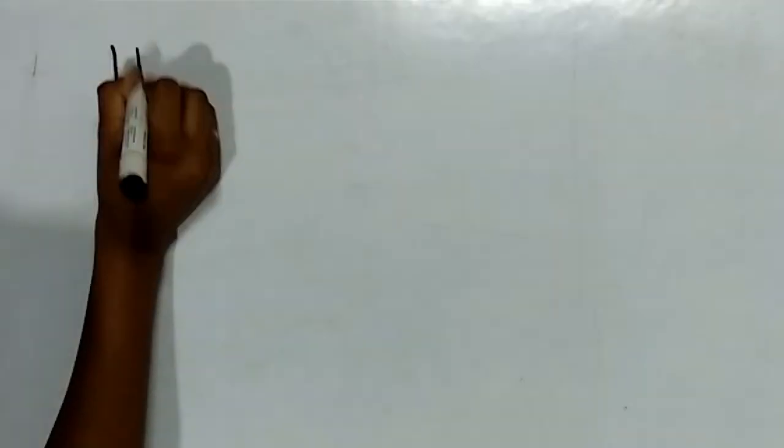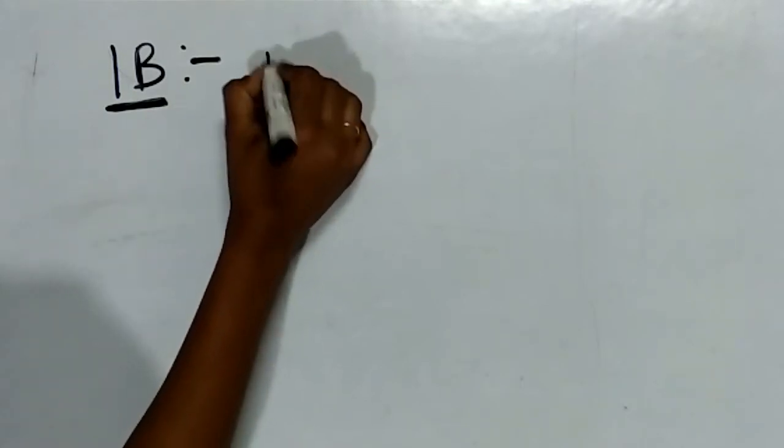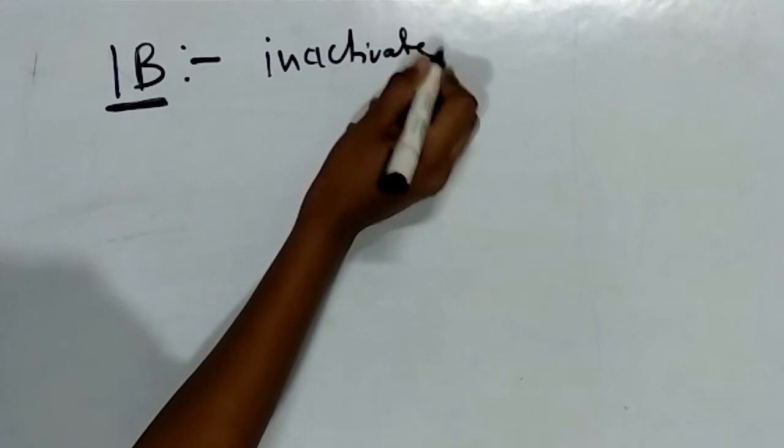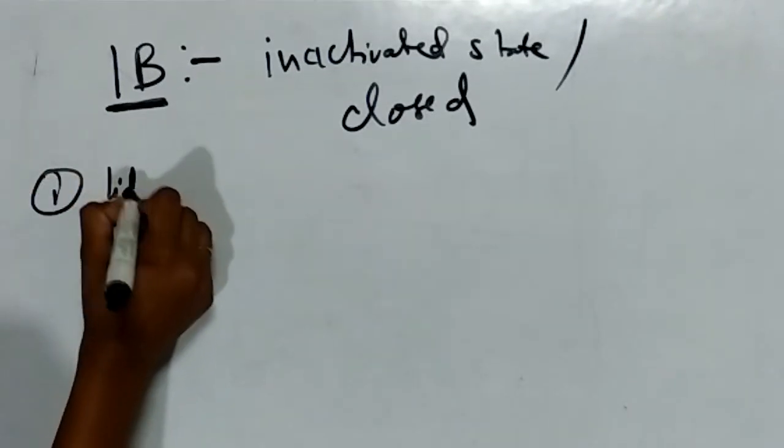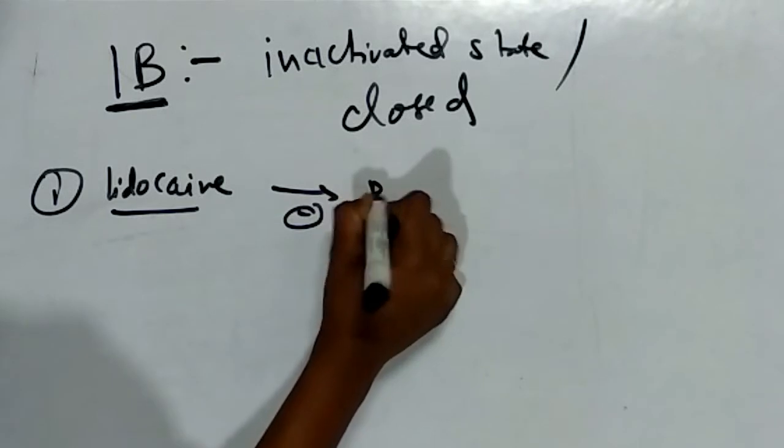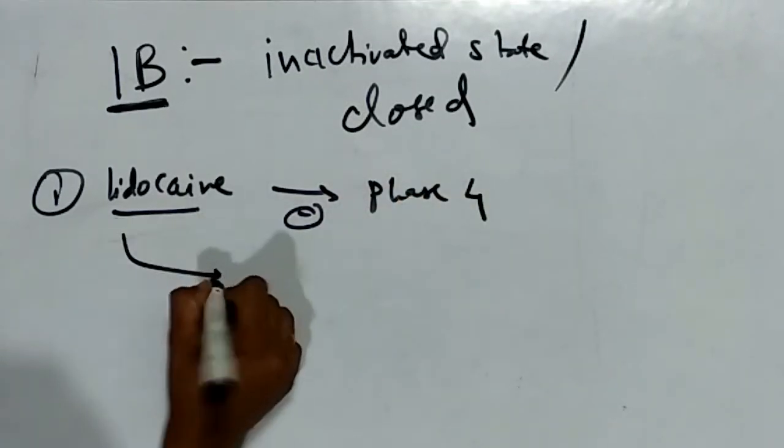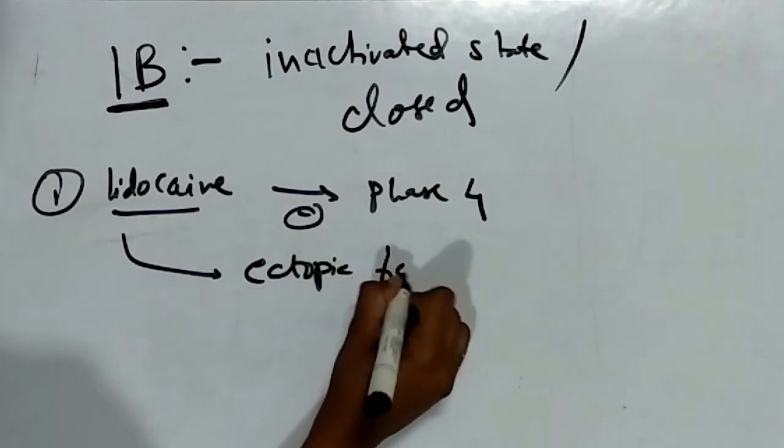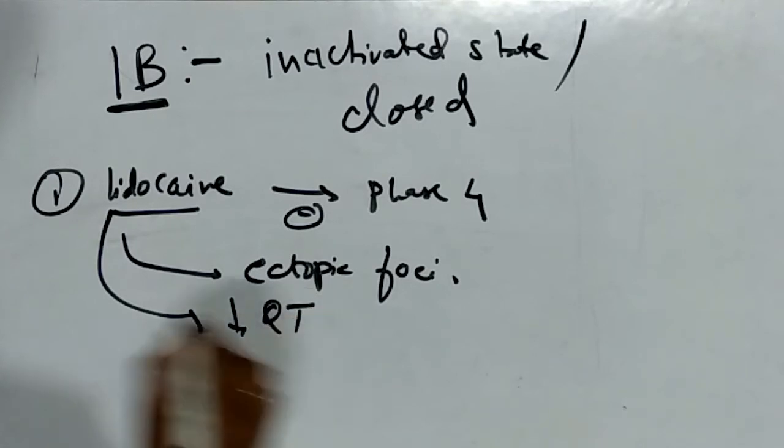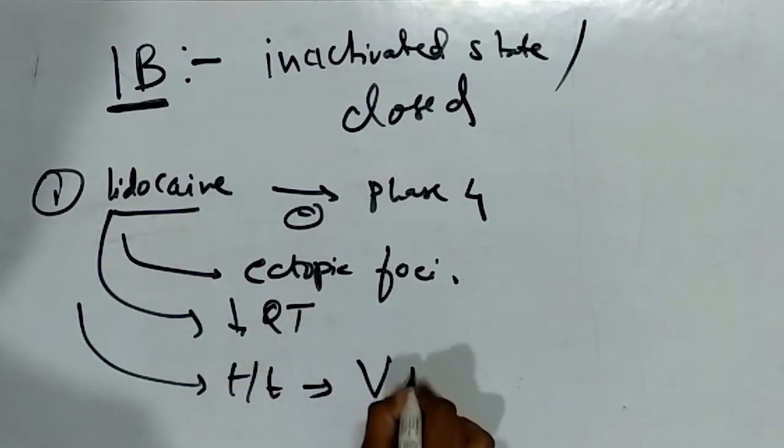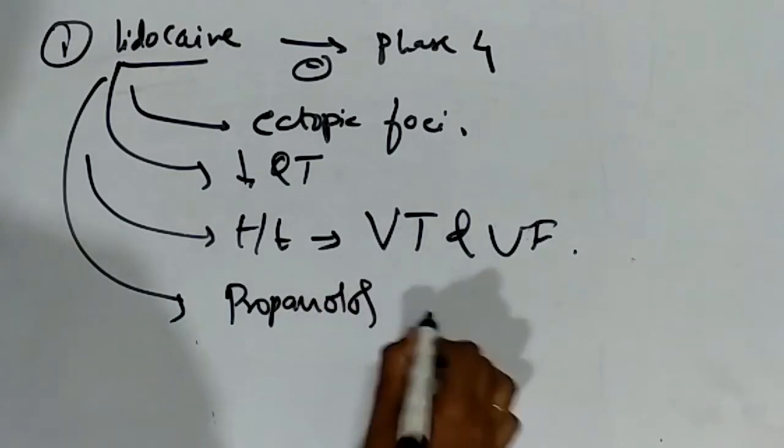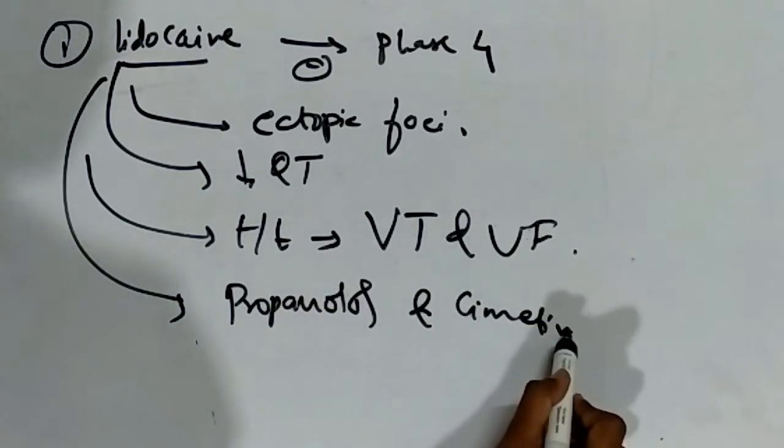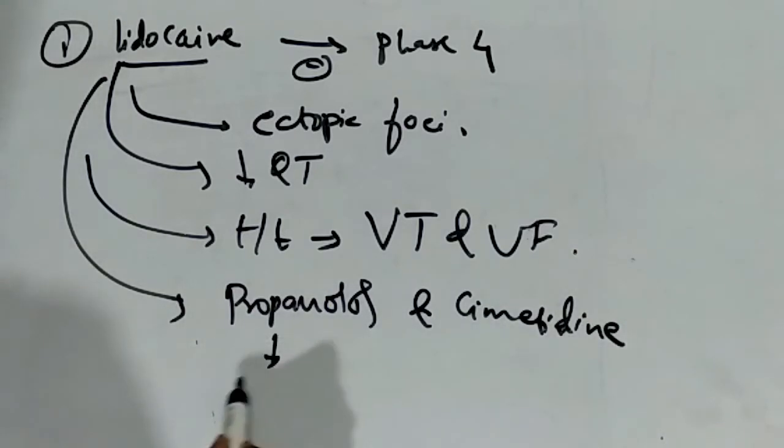Now we will see class 1B, which acts on inactivated state or closed state sodium channels. The first drug is lidocaine. It inhibits phase 4 depolarization, suppresses ectopic foci, and decreases QT. It is used for ventricular tachycardia and ventricular fibrillation. It has drug interactions with propranolol and cimetidine.